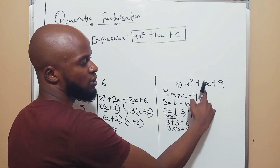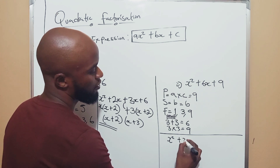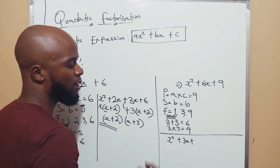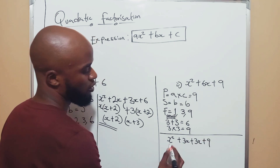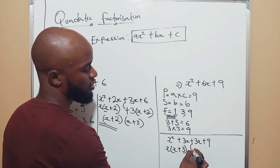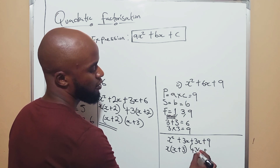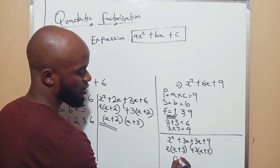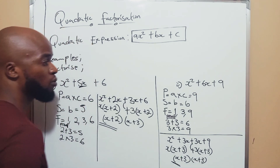Once I've found my factors, I replace the 6x. So I have x squared plus 3x plus 3x plus 9. What's common here is x, so x(x plus 3). Then what's common between 3x and 9 is 3, so 3(x plus 3). Since what's in the brackets is the same, you just pick one. It's x plus 3. And what's outside the brackets is also x plus 3. So the answer is (x plus 3)(x plus 3).